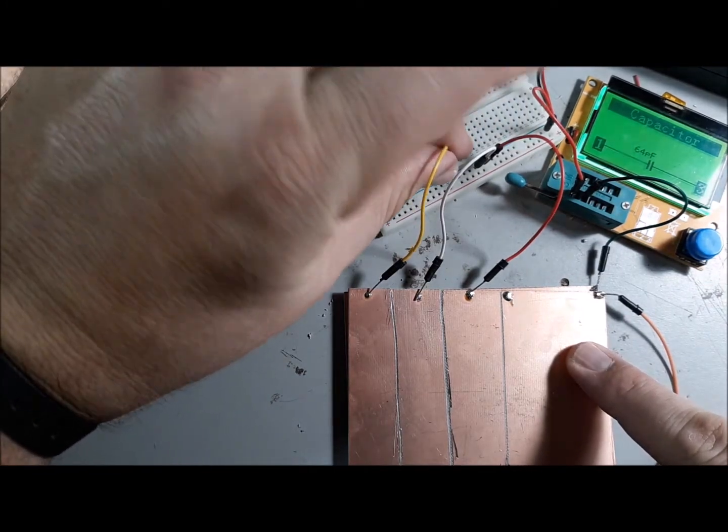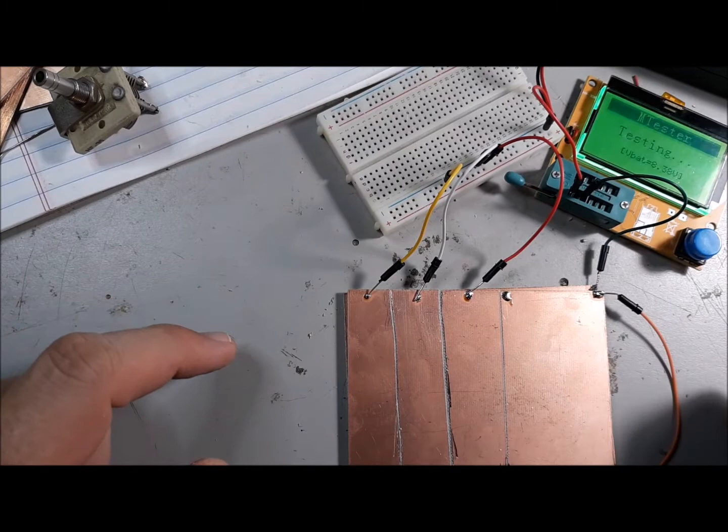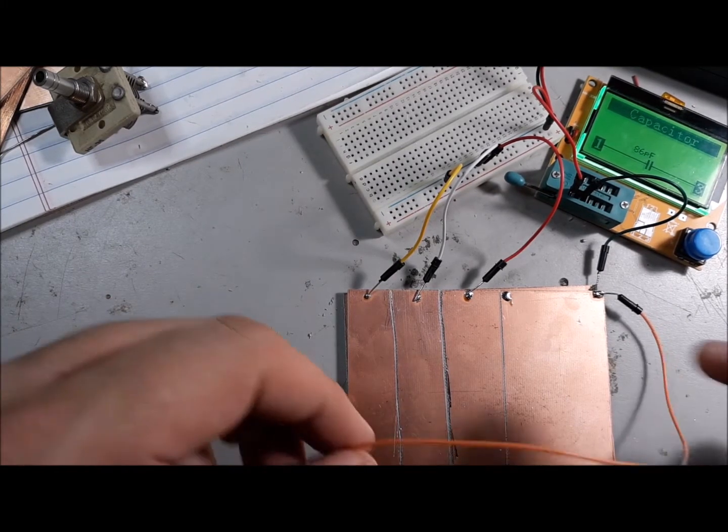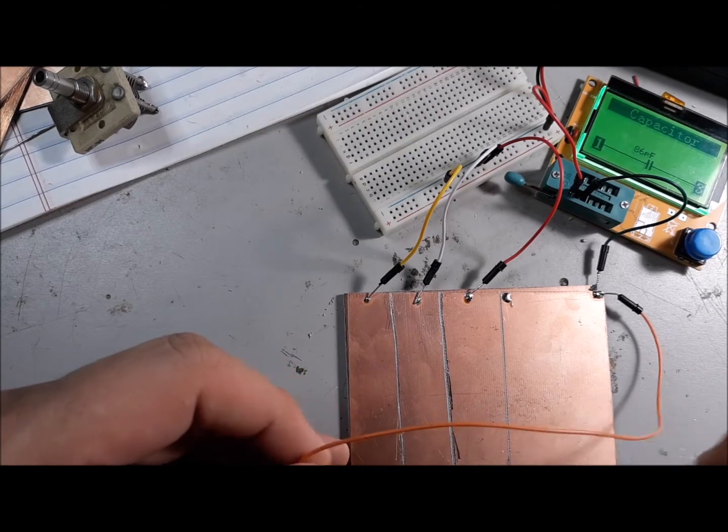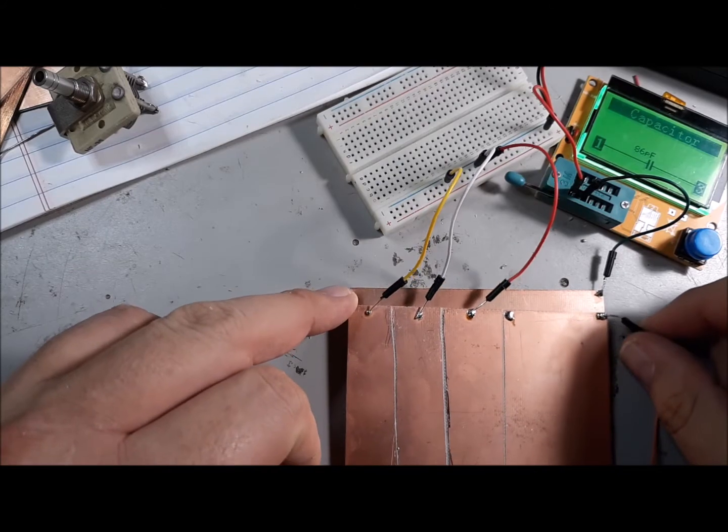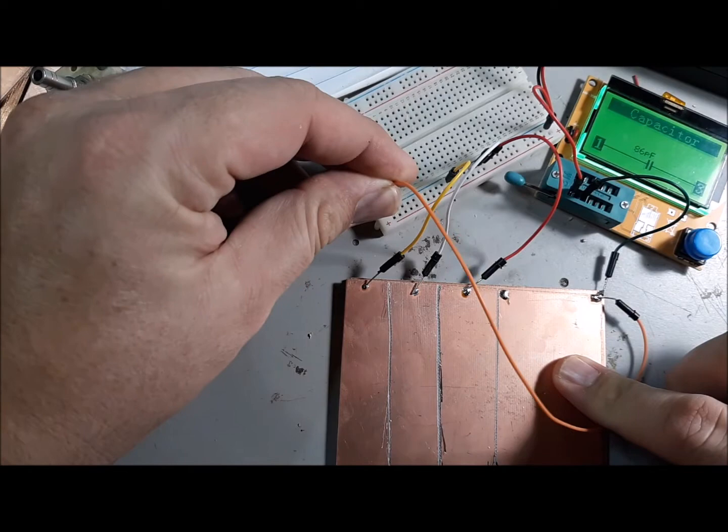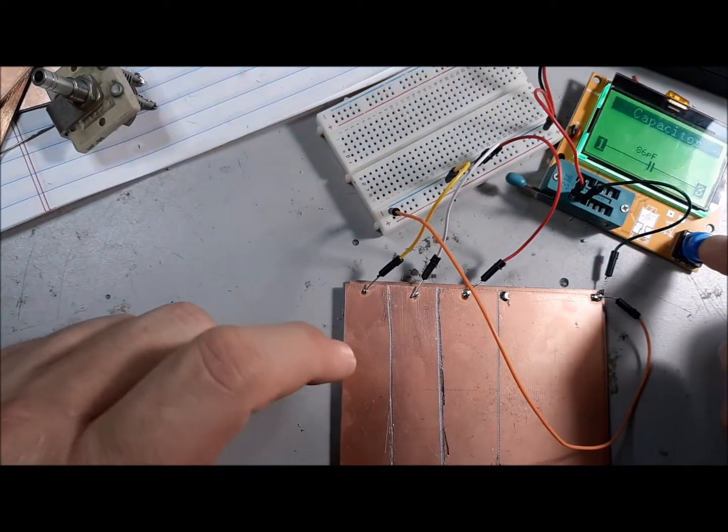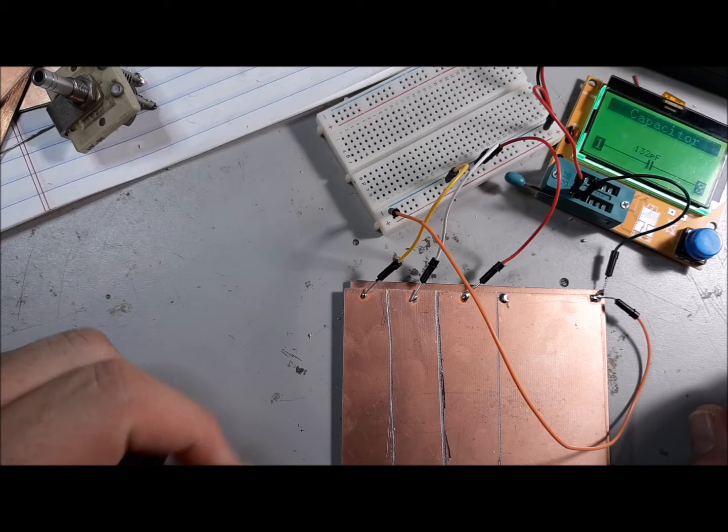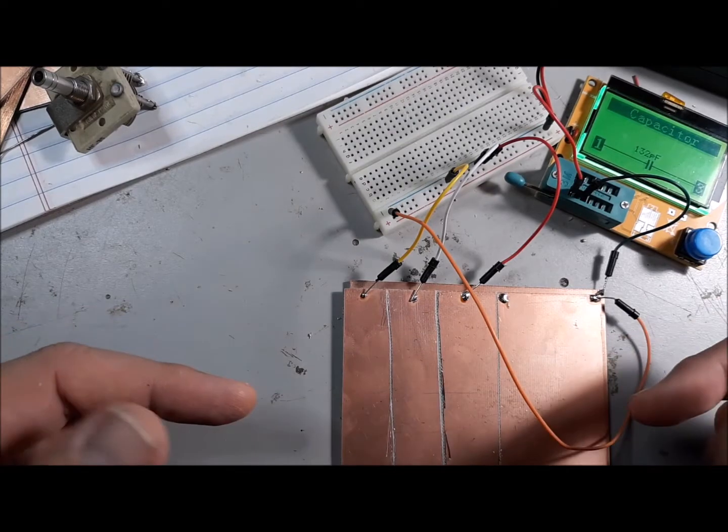So if I add the yellow wire, I'm adding all three of these, and we're at 86. And if I add the orange wire, which is this far side over here—you can see it's not connected to the other board underneath it, that's the green wire—but if I add this one, I've got 132 picofarads, which is basically as much as you can get with this board even if these are all connected together.